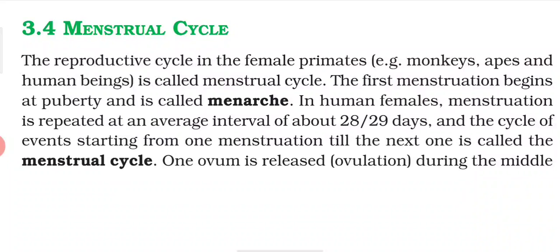In human females, menstruation is repeated at an average interval of about 28 to 29 days. The cycle of events starting from one menstruation till the next one is called the Menstrual Cycle. So it is at an average of 28 to 29 days, and between the start of one menstruation and the next is known as the Menstrual Cycle.